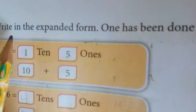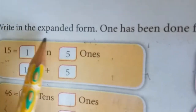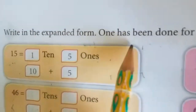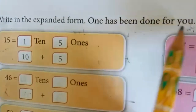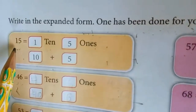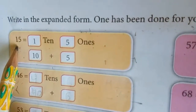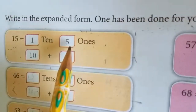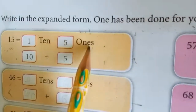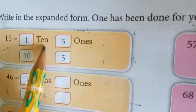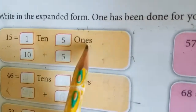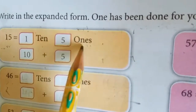Write in the expanded form. Number 1 has been done for you. 15 is written as 1 ten and 5 ones.